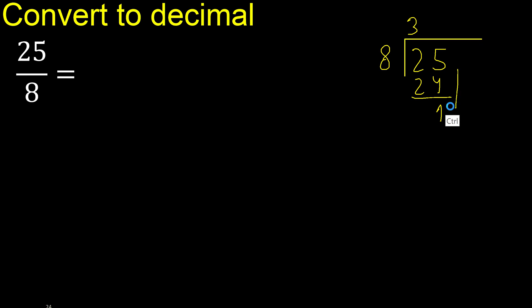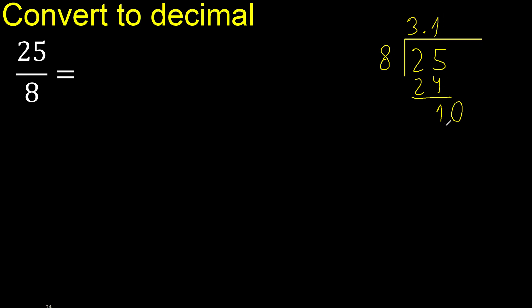There is no next number, therefore always complete with 0 here, with point. 0 point 10. 8 multiplied by 2 is greater, so multiply by 1: 8.